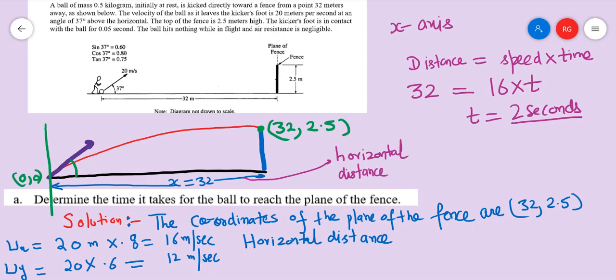We are also given the horizontal distance traveled from the point at which the ball is hit by the footballer till the fence. The distance is 32 meters. So consider the motion only in the x-axis.